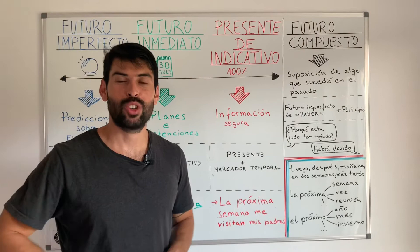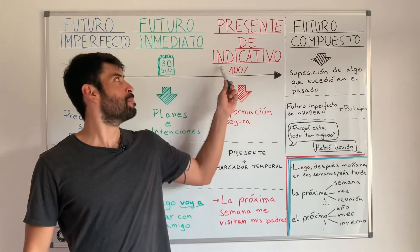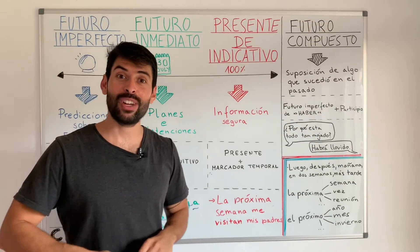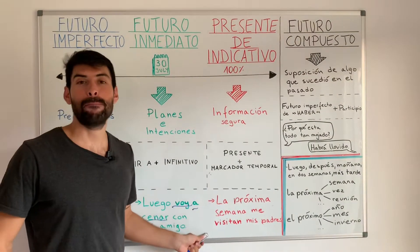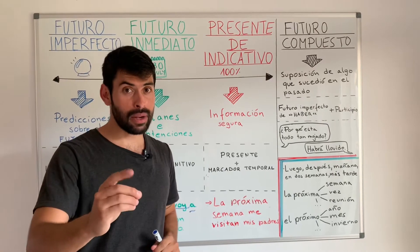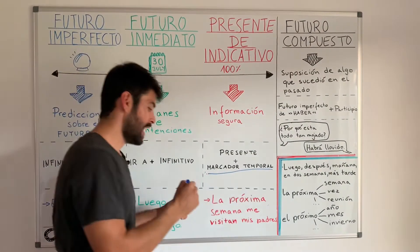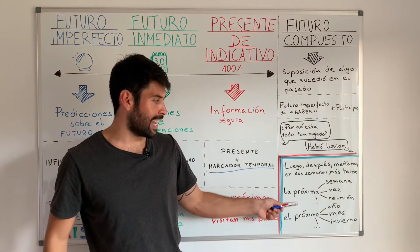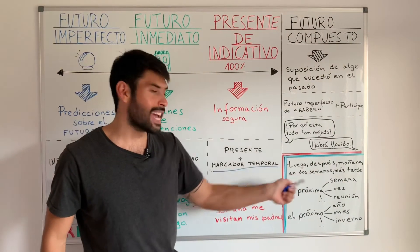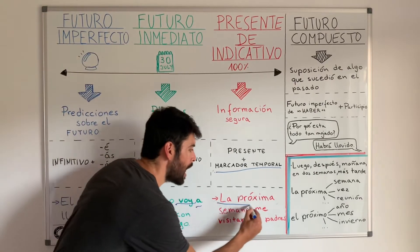Y chicos, tenemos otra manera de hablar del futuro utilizando el presente de indicativo. En el ejemplo del día de hoy tenemos: la próxima semana me visitan mis padres. Recuerda siempre, pero siempre, utilizar marcadores temporales. En este caso tú puedes ver varios de ellos en el rincón de la pizarra. Por ejemplo, tenemos: después, mañana, luego, etcétera. Y en este caso tenemos: la próxima semana.